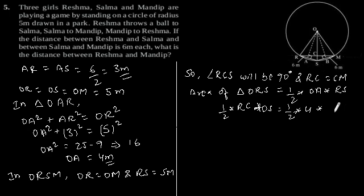This gives 1 by 2 into OA is equal to 4 into RS is 6. This gives RC is equal to 24 divided by OS is 5.